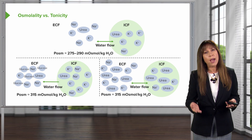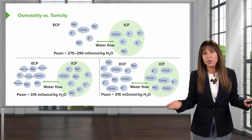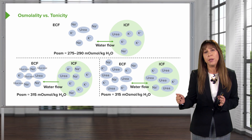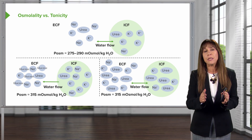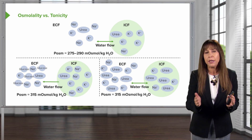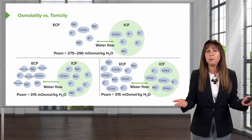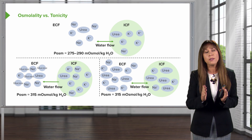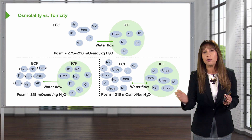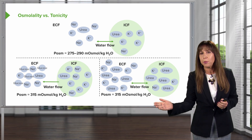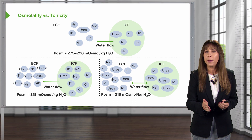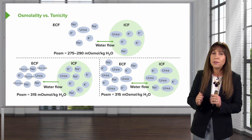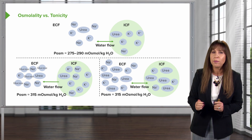If we have a situation where there's an increase in urea, even though plasma osmolality increases to 315 milliosms per kilo — just as with our patient who has an increase in glucose — urea can cross the membrane freely. Therefore, it distributes equally between the intracellular and extracellular compartments, and does not exert a tonic effect on water.